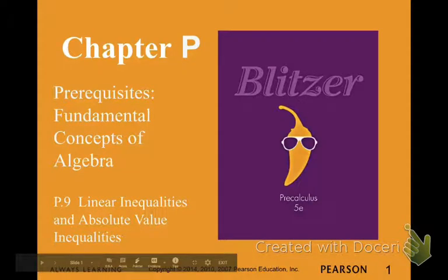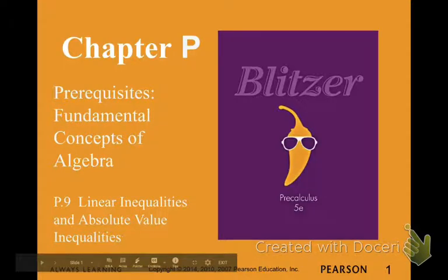Pre-Calculus, Unit P, Section 9. In this section, we're going to be reviewing how to solve linear inequalities and absolute value inequalities. While we do that, we're going to be using set notation that you learned earlier in Unit P, graphing on a number line, which you probably learned in Algebra 1. We are also going to talk about interval notation, which will be new for some of you, and we will be finding intersections and unions of intervals.